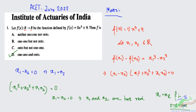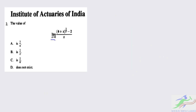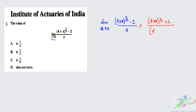Let us go to question 2. We have to find the value of the limit: as x tends to 0, (√(4 + x) - 2) / x. To solve this, we multiply both the numerator and denominator by the conjugate, which is (√(4 + x) + 2) / (√(4 + x) + 2).